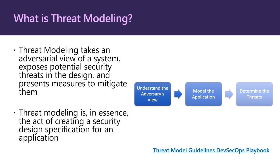Before we get into the meat of the talk, let's do a high-level overview of what threat modeling is. Threat modeling works to identify, communicate, and understand threats and mitigations within the context of protecting something of value. A threat model is a structured representation of all the information that affects the security of an application or system — essentially a view of the system and its environment through the lens of security. Threat modeling can be applied to a wide range of things, including software applications, systems, networks, distributed systems, Internet of Things devices, your refrigerator, and in this case, the Death Star.